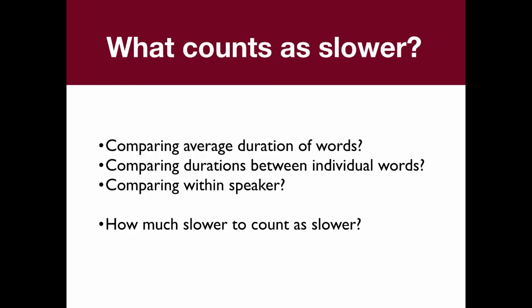What about what counts as slower? Should we compare average duration of words in the sentence, or actually compare durations between individual words — for example, take the word 'thank' and compare its duration in vocal fry versus non-vocal fry? Should we do this within a speaker, or pool across speakers? And how much slower counts as slower — does it have to be twice as slow, 1.5 times as slow, or what? Those are all things we need to decide.